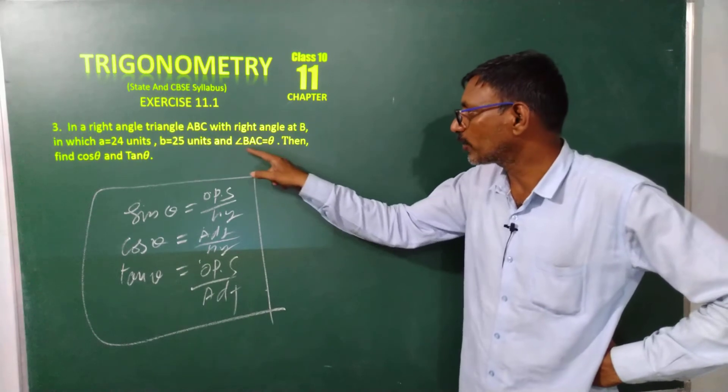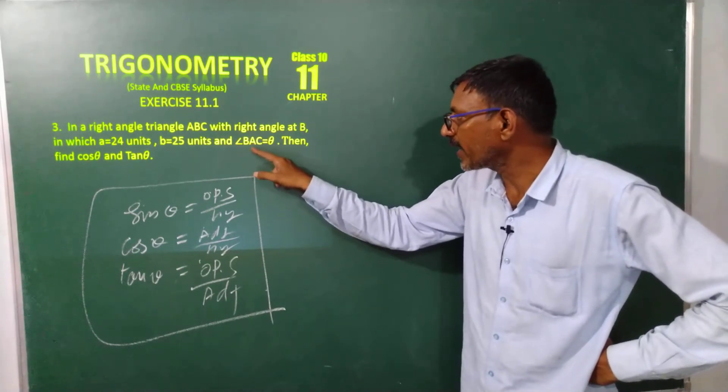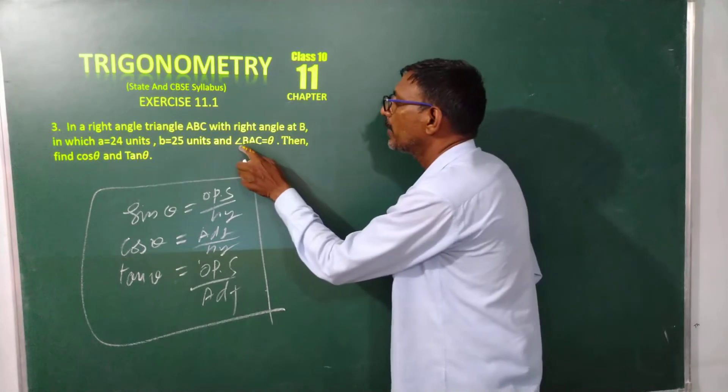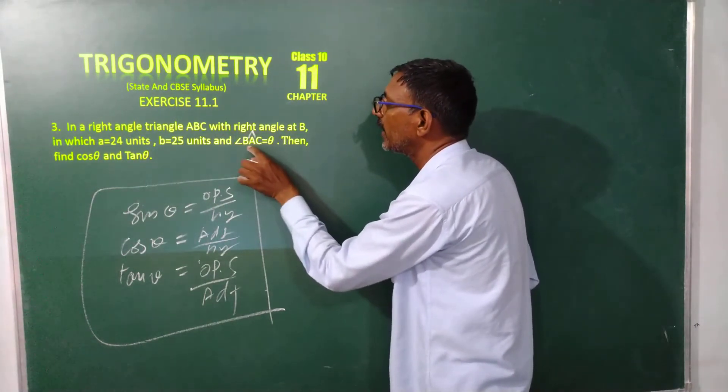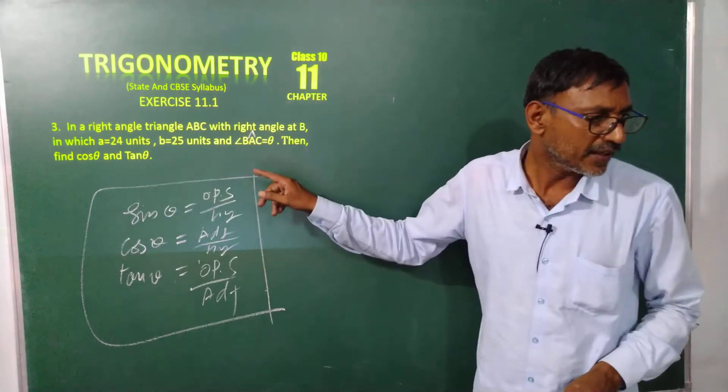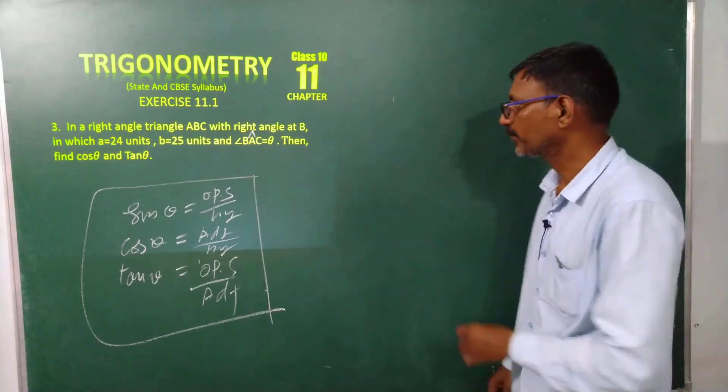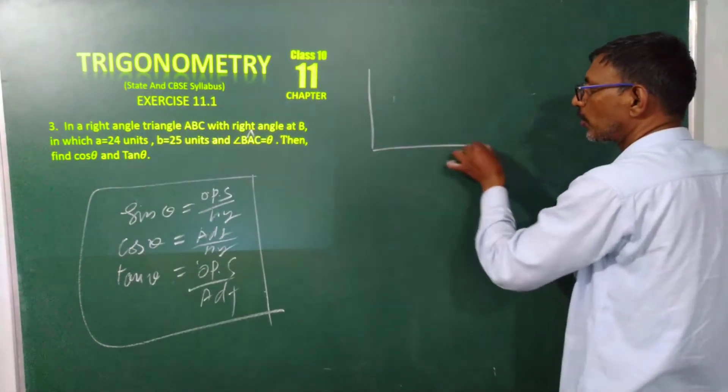It is given a clue that angle A is theta, angle BAC, this is my angle. What is the middle letter? A. At A is theta.